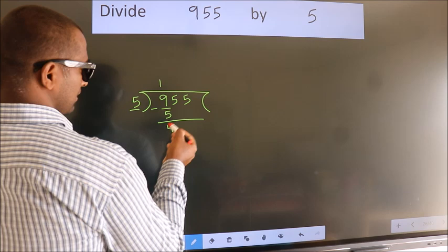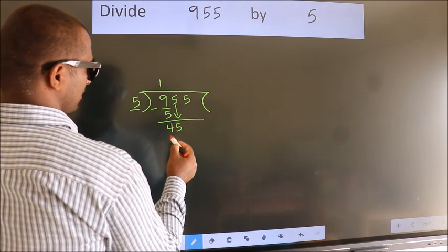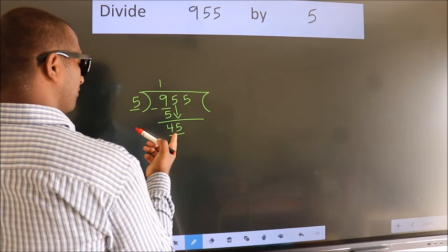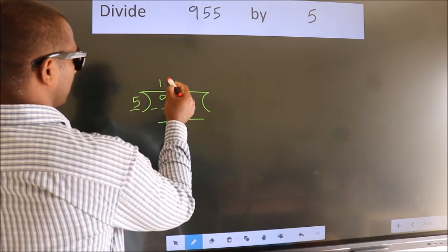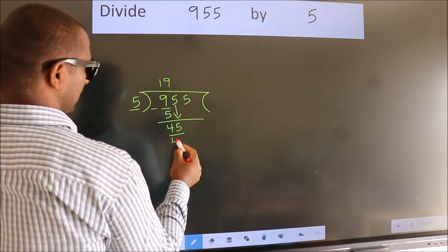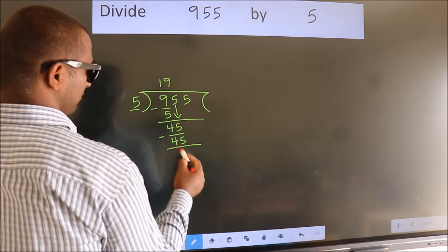After this, bring down the beside number, so 5 down, so 45. When do we get 45? In 5 table. 5 nines, 45. Now we subtract, we get 0.